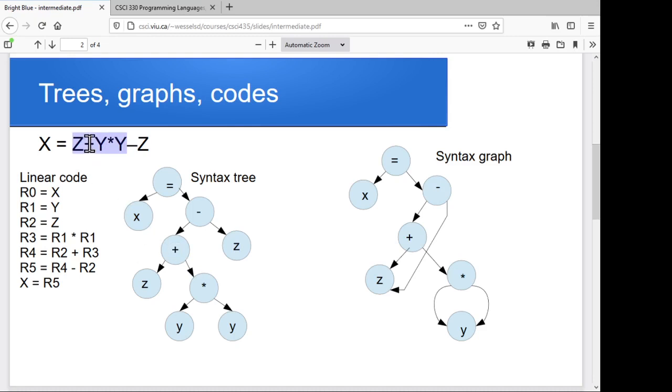It's going to do the plus last, so we've got that highest in the tree. It's adding the z to the result of the product of y and y. So we've got this syntax tree representing the expression. This is an abstract idea of the parse trees that we would have come up with as we were going through and parsing our code.